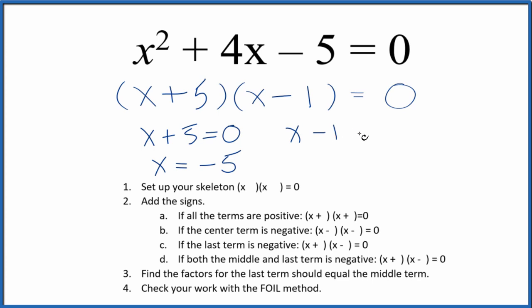Up here, x minus 1 equals 0. So we add 1 to both sides, x equals 1. If you put 1 into the equation here, 1 squared is 1 plus 4 times 1, that's 5. And 5 plus negative 5, that equals 0.